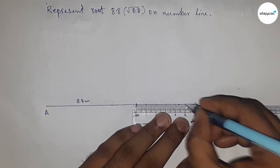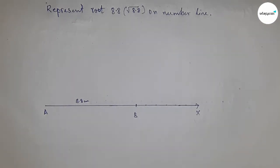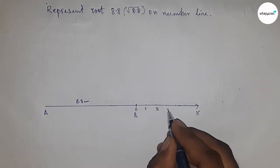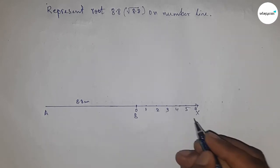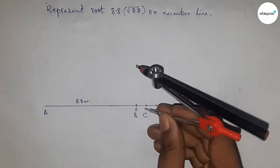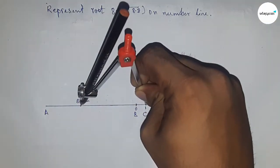Mark 0, 1, 2, 3, 4, 5, 6, and so on. Take this as point C. Next, bisect the line AC by taking greater than half of AC and drawing arcs.